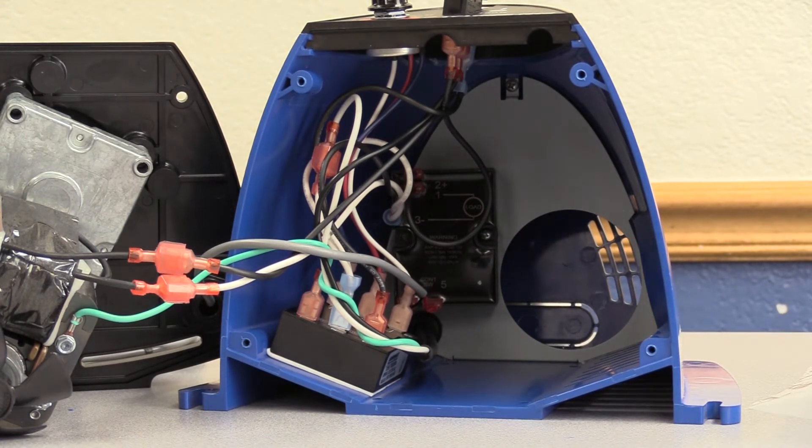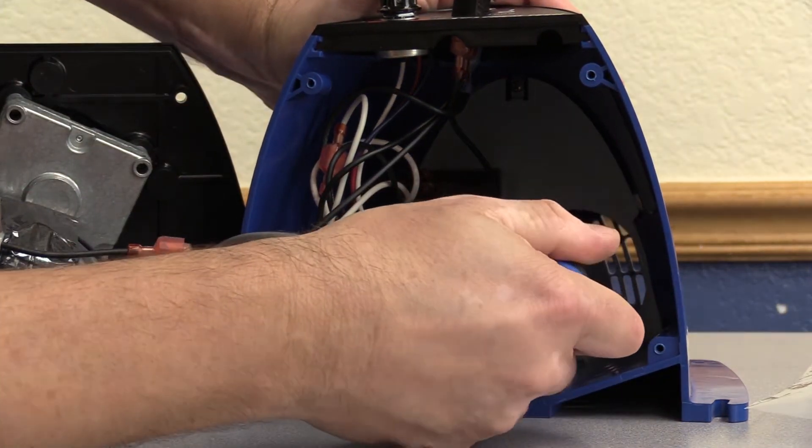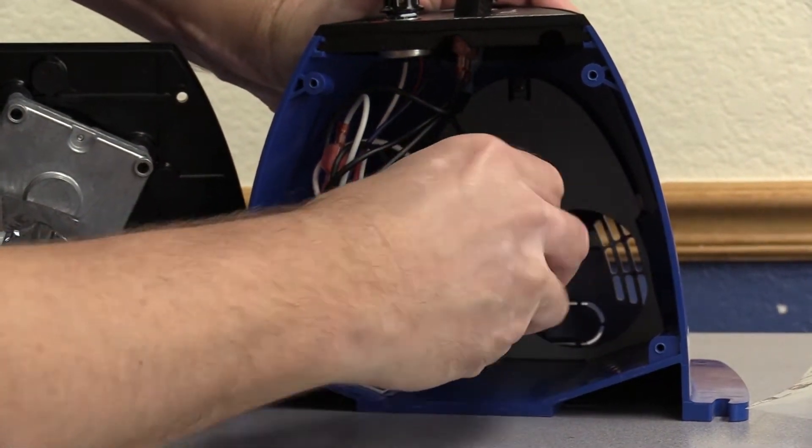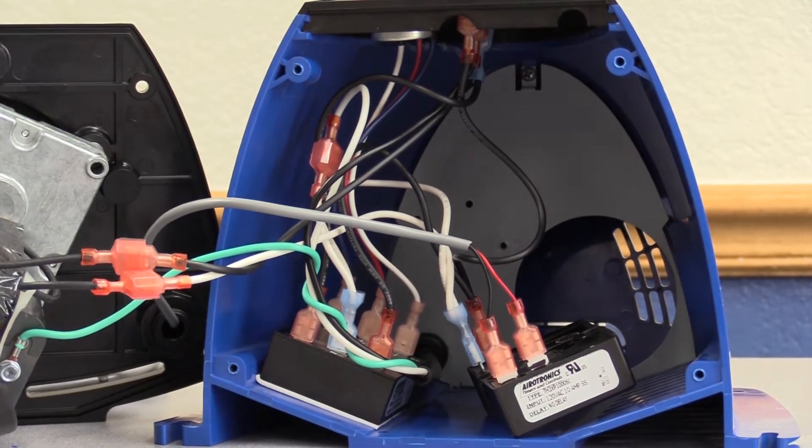To change the timer on the baffle, remove the screws from the timer module. Loosen the old timer module from the baffle. Make sure to scrape any remaining tape if present as this is necessary to make a good ground.